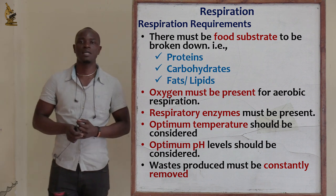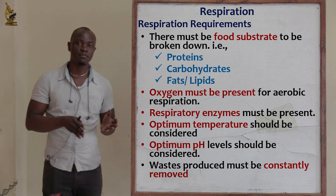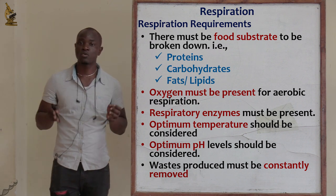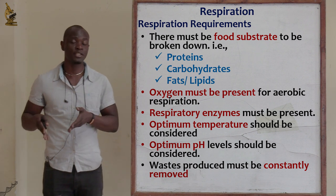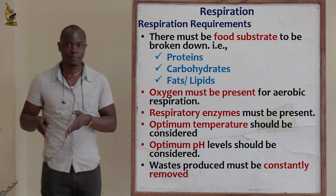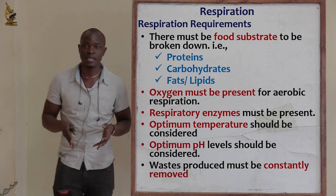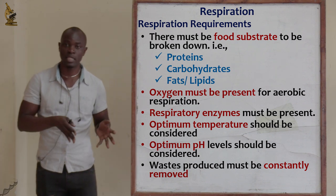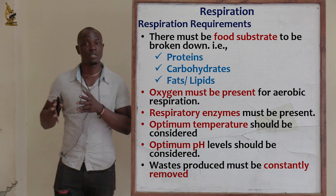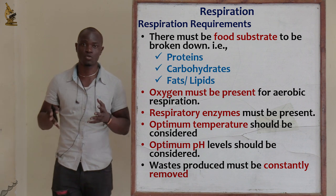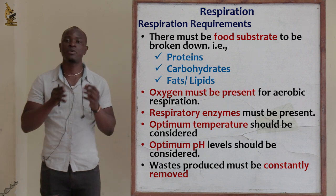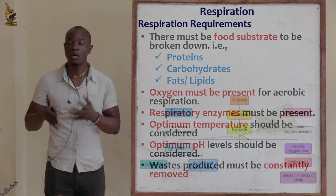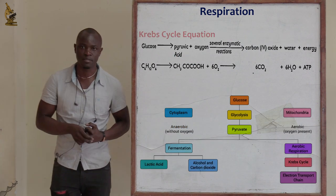Lastly, the different waste products produced by the cell must be removed immediately, because these waste products will alter the pH of the cell. If the pH is altered — whether too acidic or too basic — this will destroy the enzymes and respiration will not take place. Therefore, all waste products must be immediately removed for optimum respiration to occur.